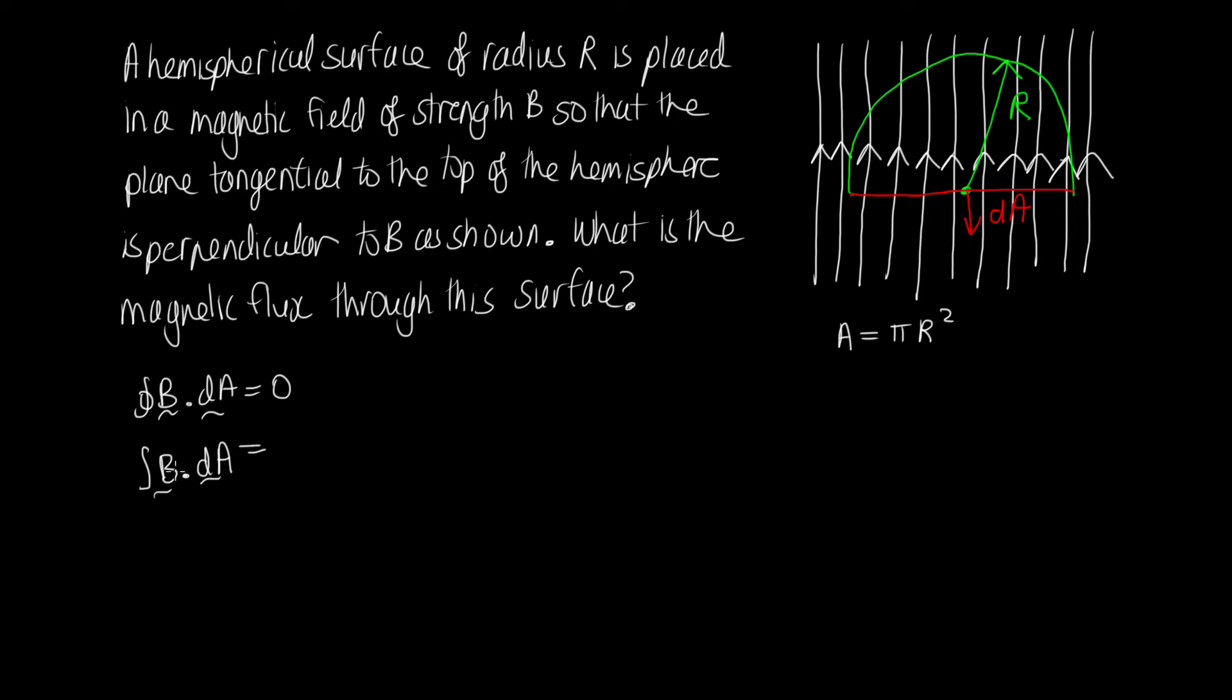So when we substitute in for these, we can pull the magnetic field out the front because we've got a constant magnetic field here. But we'll end up with a negative sign because B and dA are in opposite directions. So we can write this as minus B dA as the flux through just this circle here. But we know what we get when we integrate over dA because we know what the area of our circle is. So this is equal to minus B times πR². So we now know the magnetic flux through the circular bottom to this hemisphere.